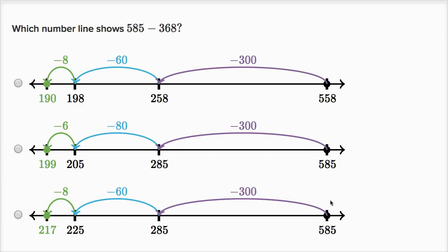Let's see, these second two number lines both start at 585, or we're starting our computation at 585. This one's starting at 558, so that doesn't make sense. Let's look at these two choices.